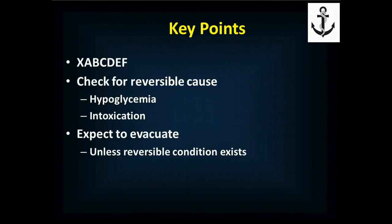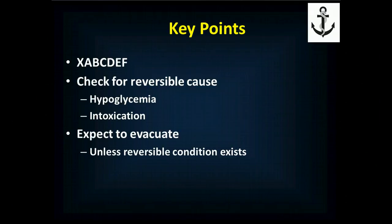You need to check for a reversible cause. This is the first most important test after XABCDEF. You're going to get vital signs, but in terms of testing, you're going to check a blood sugar — that is the most critical thing to do in terms of determining what's going on. That piece of information rapidly changes your approach and treatment if it's abnormal, particularly if it's low. Evaluate them for any signs of intoxication — not just alcohol, but track marks or drug paraphernalia. Expect to evacuate these patients unless there's some reversible condition.